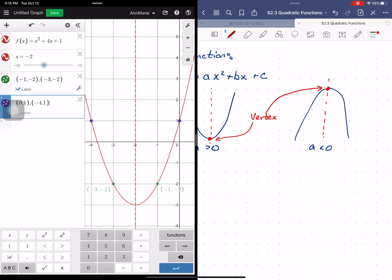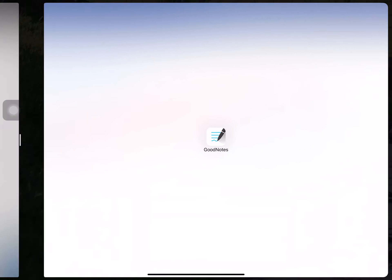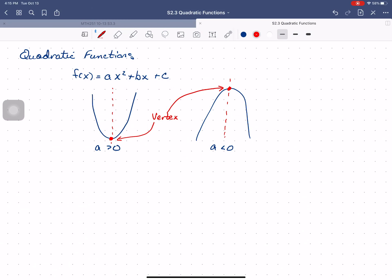So if you understand symmetry, you can actually reduce the amount of work that you need to do in order to graph a parabola, because you only have to graph one side because you've got the other side through symmetry.